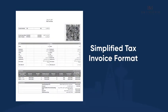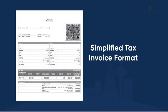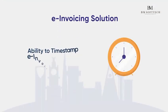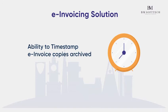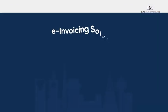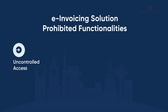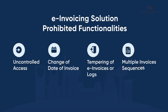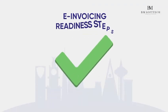The e-invoicing solution must have the ability to timestamp e-invoice copies and archive them. Prohibited functionalities include: uncontrolled access, alteration of invoice chain date, tampering of e-invoices or logs, and multiple invoice sequences.